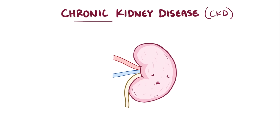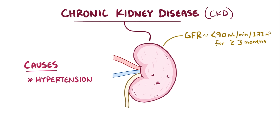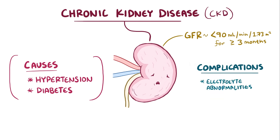Alright, as a quick recap, chronic kidney disease is when the glomerular filtration rate falls below 90 mL per minute per 1.73 m2 over at least 3 months. Chronic kidney disease is mainly caused by diabetes and hypertension, and complications include electrolyte abnormalities, toxin buildup, hypertension, and weak bones.